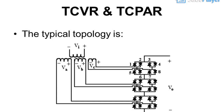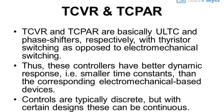TCVR and TCPAR: TCVR and TCPAR are basically ULTC and phase shifters, respectively, with thyristor switching as opposed to electromechanical switching. Thus, these controllers have better dynamic response, i.e., smaller time constants, than the corresponding electromechanical-based devices. Controls are typically discrete, but with certain designs these can be continuous.